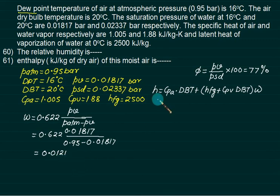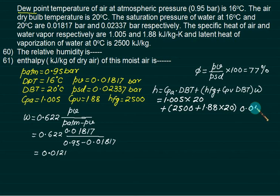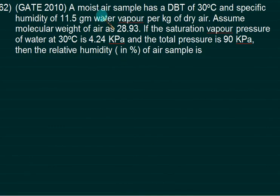Put this value: 1.005 times dry bulb 20 degrees Celsius plus HFG 2500 plus CP vapor 1.88 times dry bulb 20 multiplied by 0.0121. The answer is 50.8 kilojoules per kg of moist air sample.